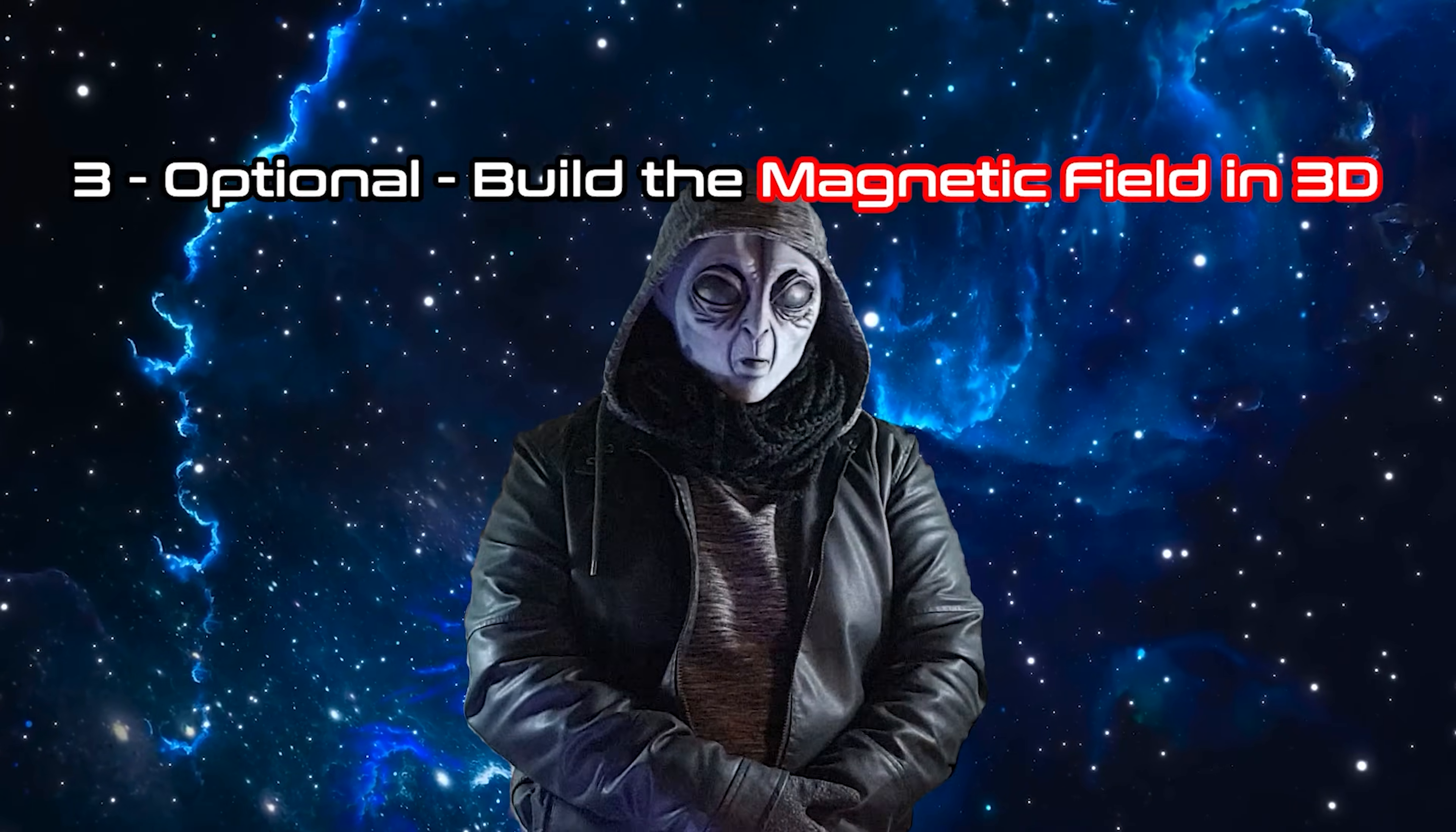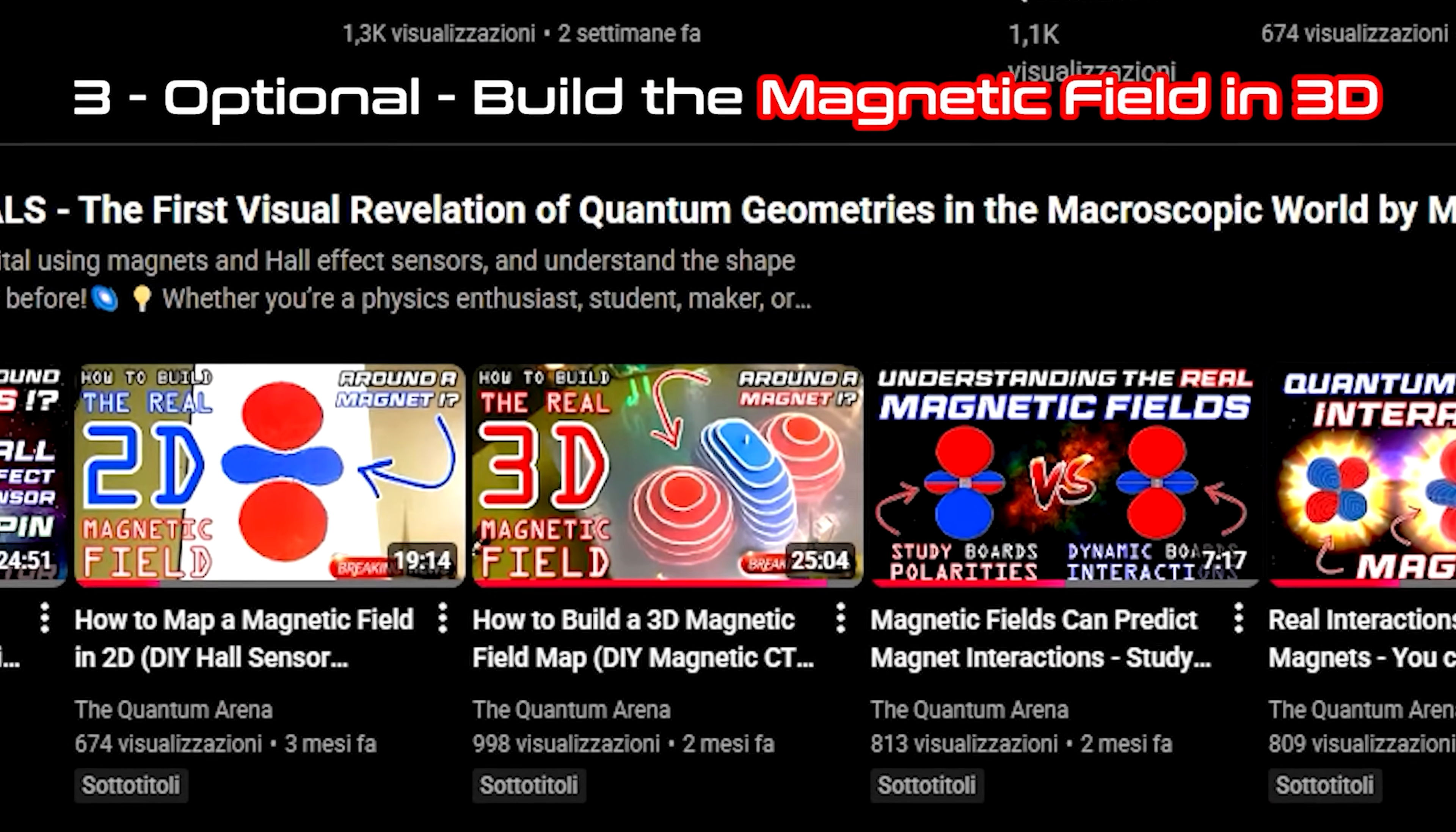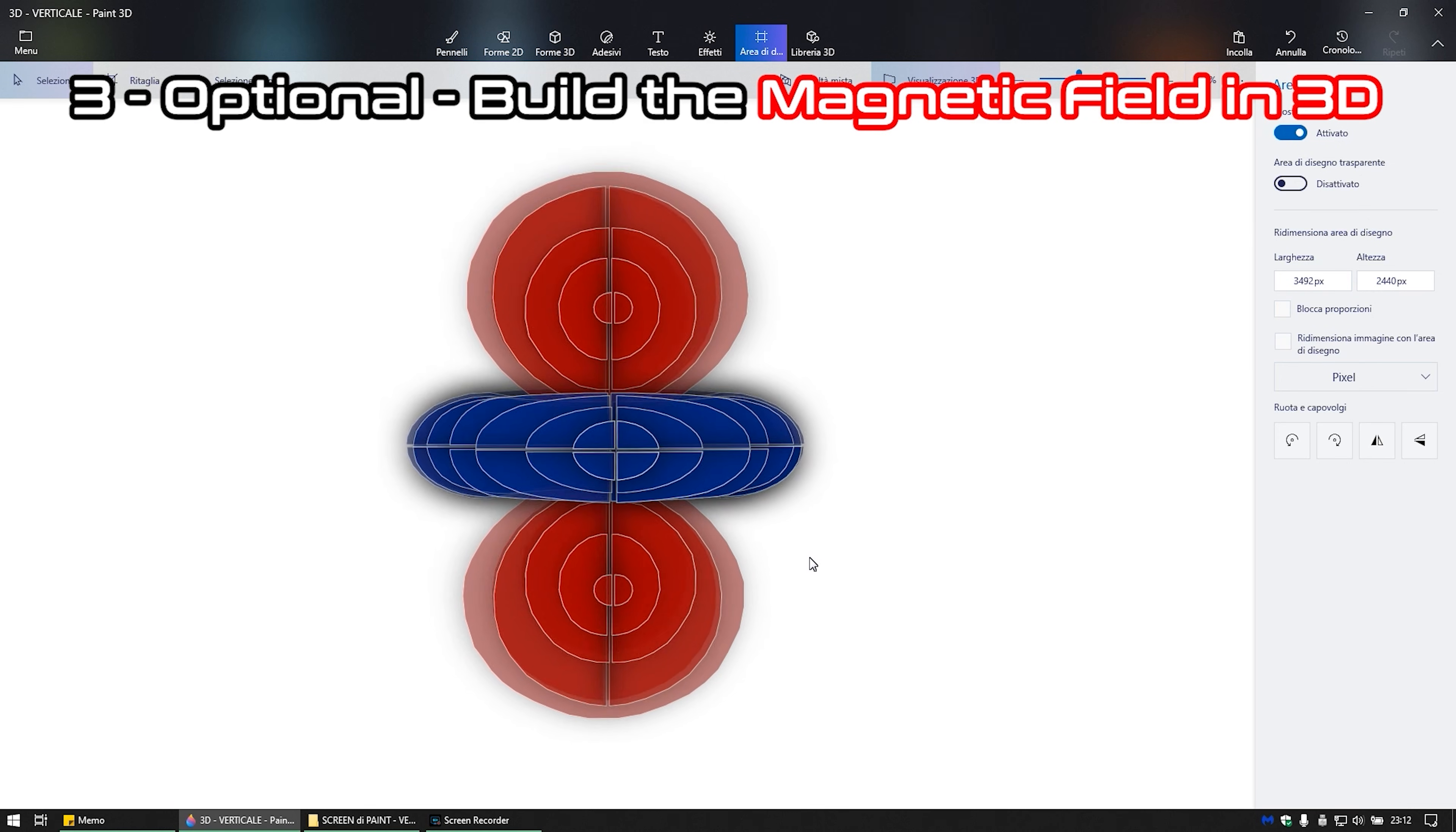3. Optional. Build the magnetic field in 3D. If you want, you can go further and do something more complex, and frankly artistically cool, as Marcio does in this video, where he reconstructs the real magnetic field at a giant 3D scale, both manually and using software. And here too, everything is explained in the smallest details.